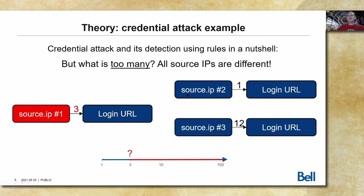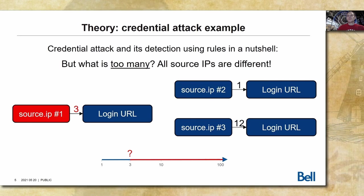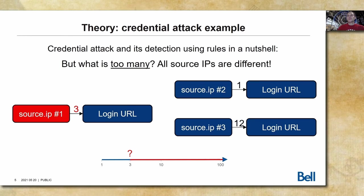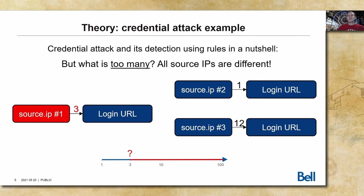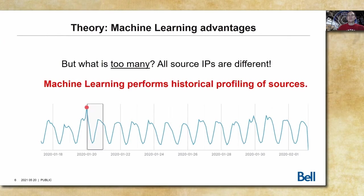For example, it will work for SourceIP2 that never historically generated more than one connection a minute — ideal customers who never forget their credentials. However, for SourceIP3, which is a public IP shared by multiple customers and historically shows higher numbers, for example 12 connections per minute, this kind of IP will be a constant source of false positives for a rule with threshold of three. We can mitigate this by raising the threshold to 15, which solves the false positive problem with IPs like SourceIP3. However, a rule threshold of 15 will leave malicious actors at SourceIP1 under the radar. This is when machine learning comes in handy, because it performs historical profiling of sources.